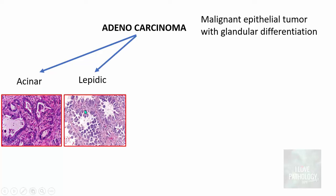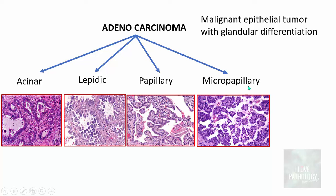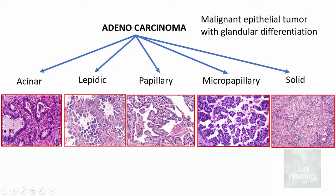The second type is lepidic adenocarcinoma, similar to adenocarcinoma in situ — the tumor tends to grow along the alveolar margins, covering the alveoli. Third is papillary adenocarcinoma, where malignant cells form papillae with delicate fibrovascular cores — finger-like projections lined by malignant cells. Fourth is micropapillary adenocarcinoma, with small clusters and micropapillae that lack fibrovascular cores. Fifth, if the carcinoma is in solid sheets, it is called solid type adenocarcinoma.